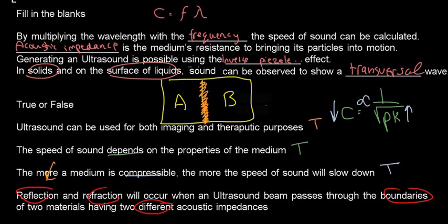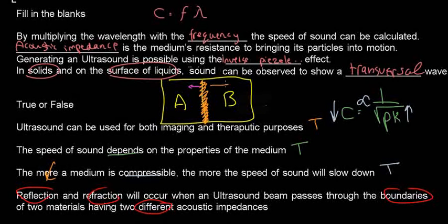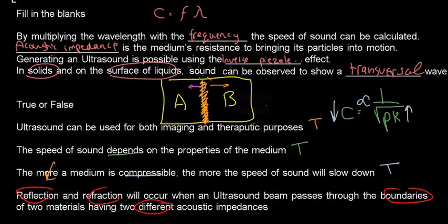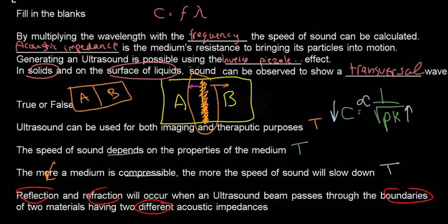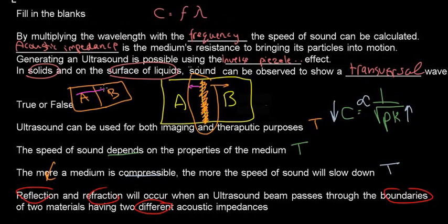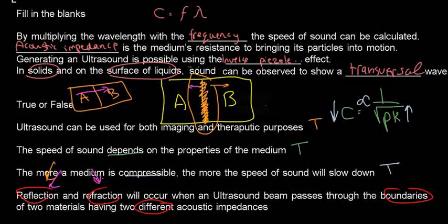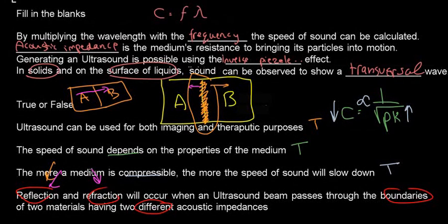At that border, we're going to see reflection and refraction. If we have an incoming sound wave, we'll see some reflection and some refraction. This only happens at the border of two acoustic impedances. If materials A and B have the same acoustic impedances theoretically, sound won't show reflection and refraction.